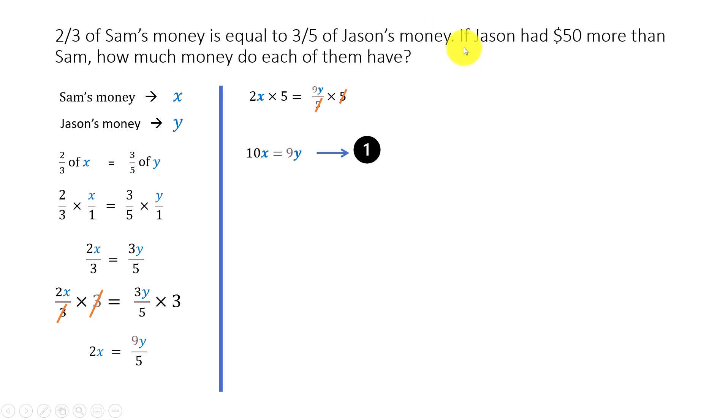Now, the second statement says if Jason had $50 more than Sam. This is very clear. Jason's money is represented by Y. Y is $50 more than X, which is Sam's money. If I want to write an equation with an equality symbol to make X and Y equal, because Y is 50 more than X, I have to add 50 to X so that both of them become equal. X plus 50 equals Y. This is my second equation.